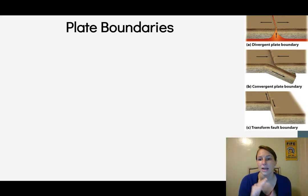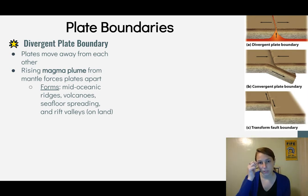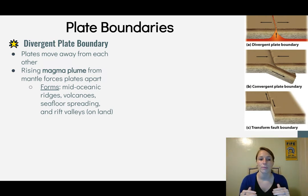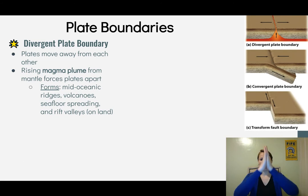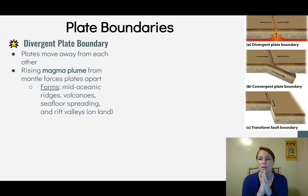The lithosphere has different plates, and there are different types of plate boundaries. The first is a divergent plate boundary, seen in the top picture on the right. This is where plates move away from each other, creating a space where magma rises up and continues to force the plates apart, forming mid-oceanic ridges, volcanoes, seafloor spreading, and rift valleys on land.